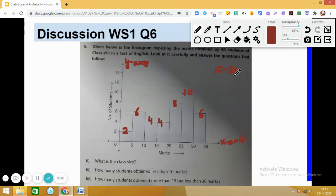What is the upper limit here? Upper limit is 20. What is the lower limit? Lower limit is 15. So the formula for class size is upper limit minus lower limit. We get 20 minus 15, which gives us a class size of 5.